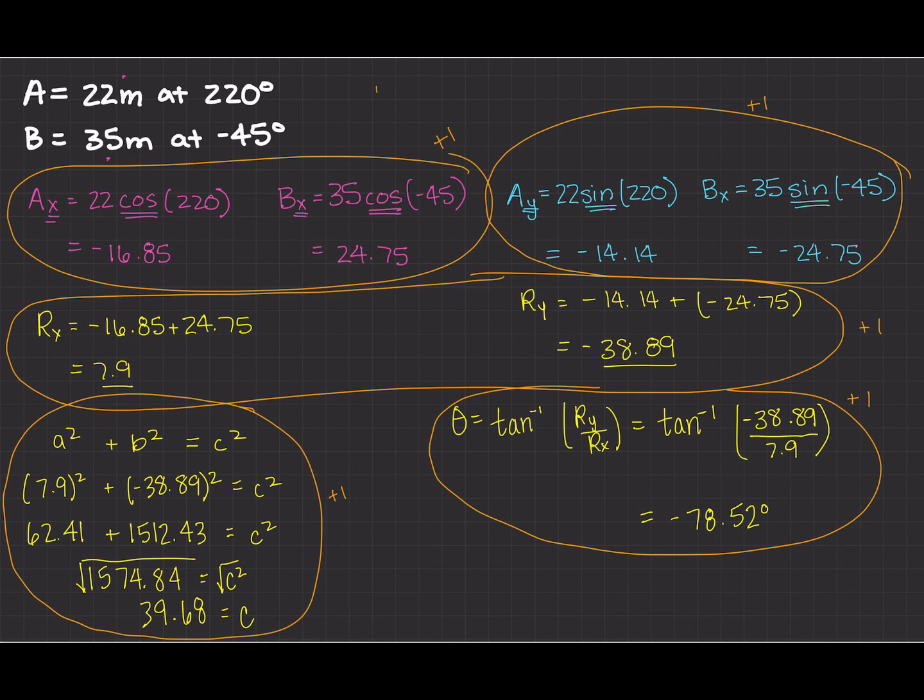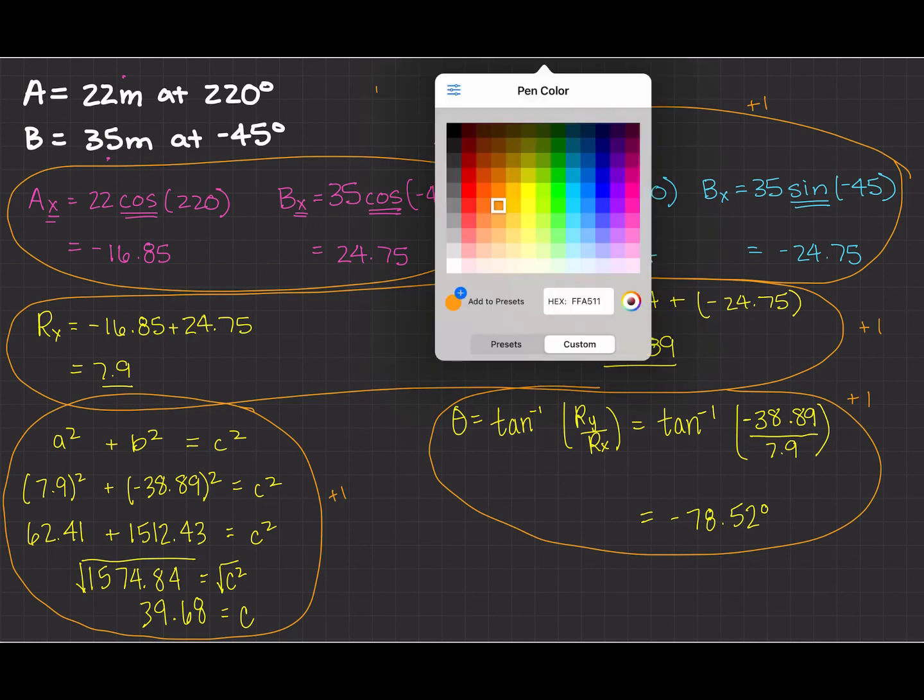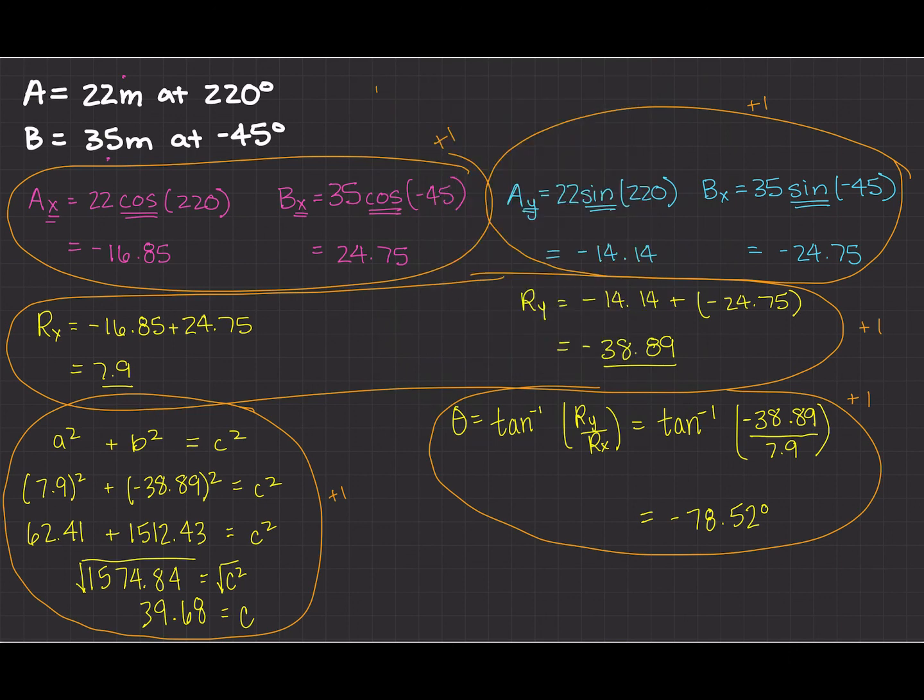And then the other really important thing for this, for these type of problems and I'm going to write it really thick is that your calculator needs to be in degrees, it should not be in radians. If you're getting like decimal point answers instead of degrees, if you're getting like 0.5 instead of 78.52, if you're getting really small numbers that's a hint that your calculator is in radians and you need to move it over to degrees to get the correct answer.